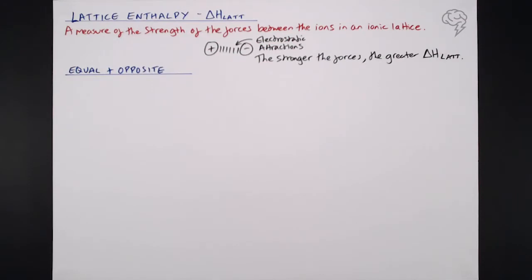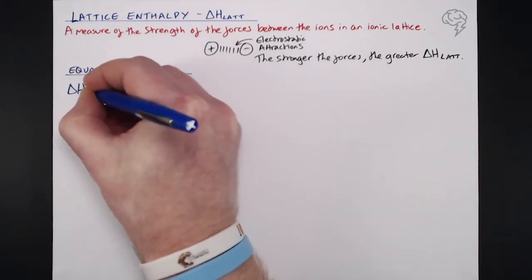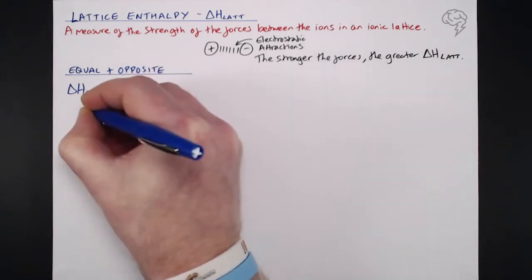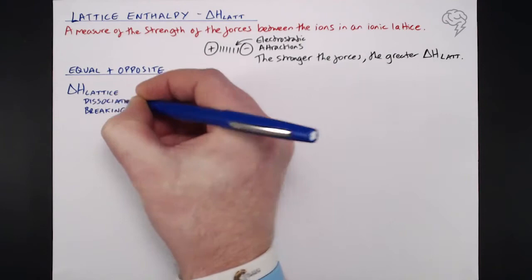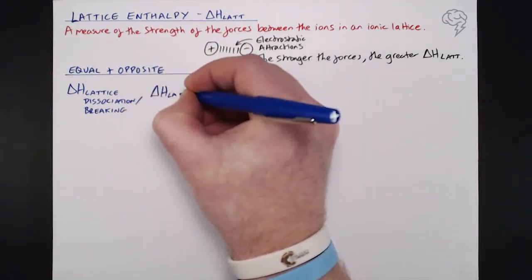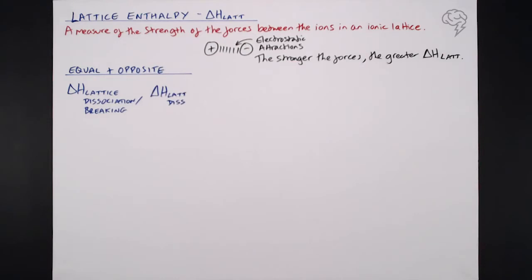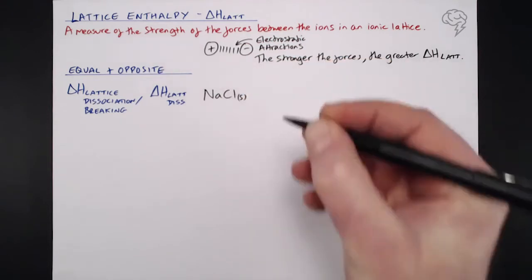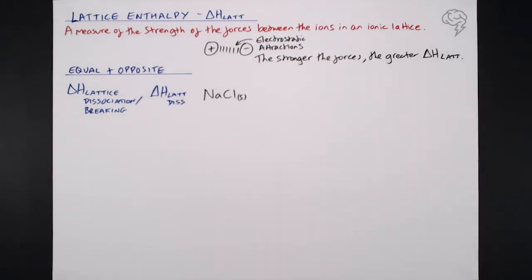Now like all enthalpies, there's an associated equation. We're going to look at sodium chloride, the go-to salt for every example. So first, we're going to look at the lattice breaking or lattice dissociation. I'm going to call that Delta H Lat Dis for short. That's the dissociation, the breaking apart of the electrostatic attractions. Let's start with some sodium chloride, NaCl solid.